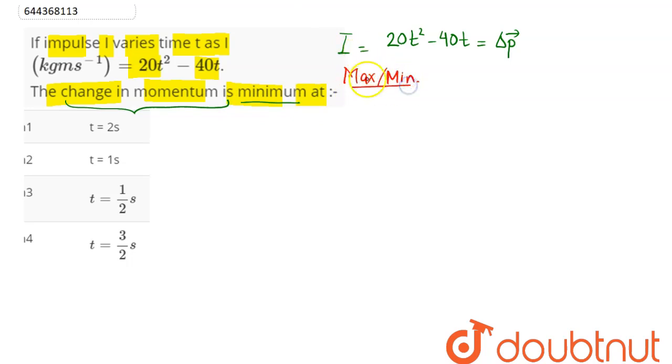this, on differentiating, will become zero at points of maximum or minimum. So first step is dI/dt = 0. Hence, differentiating this, we get d/dt of (20t² - 40t) = 0.